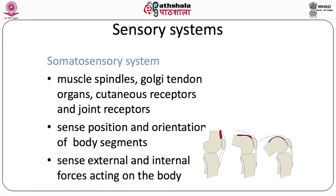At the neural level, we first need to sense our position — both of various body segments relative to each other, and relative to external space. There are three primary sensory systems responsible for sensing posture: the somatosensory system, involved in proprioception; the vestibular system, housed in the otolith organs of the inner ear; and the visual system.